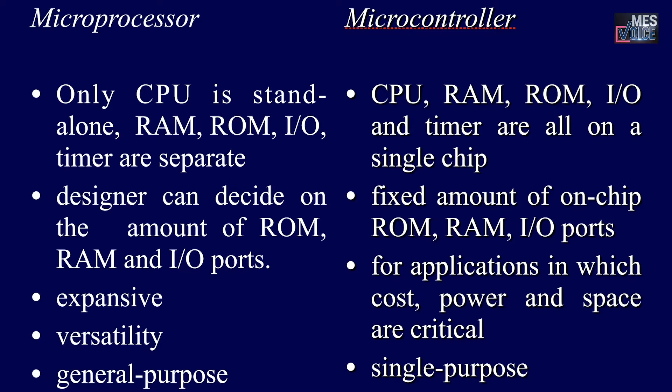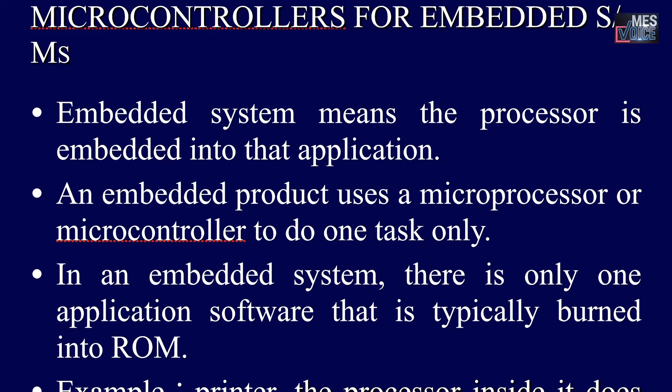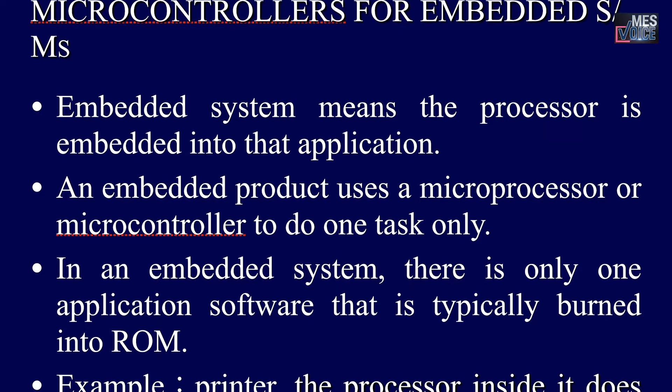For a microprocessor, the designer can decide on the amount of ROM, RAM, and input/output ports. But in the case of a microcontroller, all these are fixed — it has a fixed amount of on-chip ROM, RAM, and input/output ports. Microprocessors are expensive, versatile, and general purpose. But a microcontroller is used for single-purpose applications in which cost, power, and space are critical.